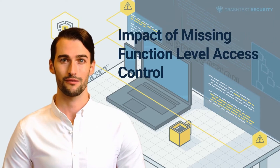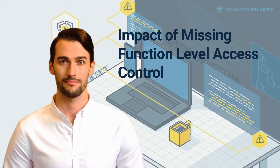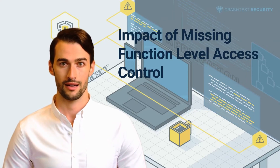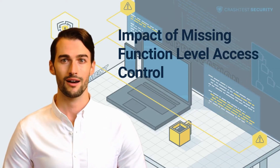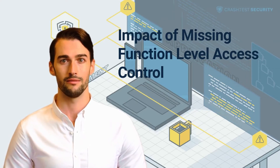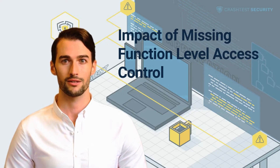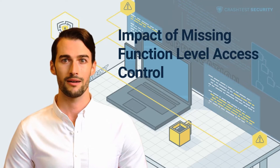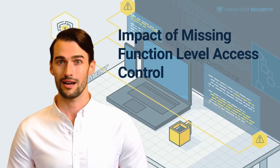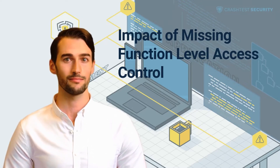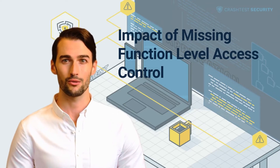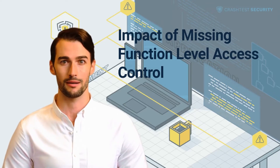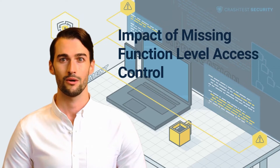Impact of missing function-level access control: It is easy for attackers to discover and exploit this vulnerability, as all it takes is an attempt to modify the resource access method and perform a restricted action. If the request is accepted, the website is vulnerable and the attackers can begin crafting further exploits as authorized users. By providing access privileges to unauthorized data and resources, this vulnerability may grant the attackers complete control of the application.